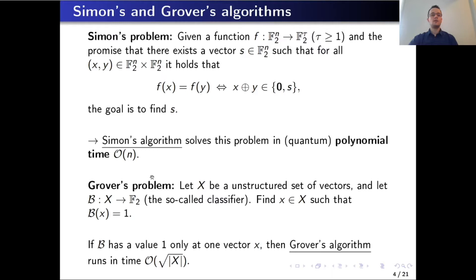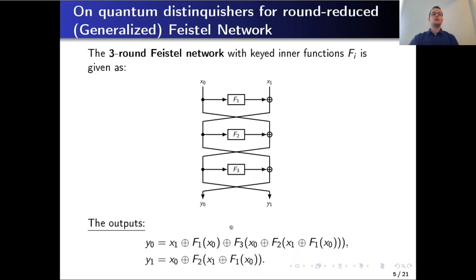On the other hand, we have Grover's problem, stated as follows: we observe a function b with binary outputs, whose domain is a set X upon which we assume no structure. The problem is to find all inputs in X at which b has value 1. Grover's algorithm solves this in time O(sqrt(|X|)). In our work, in the place of the set X we use a binary vector space.